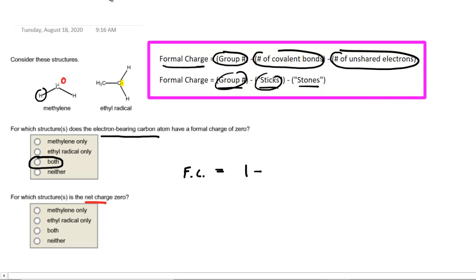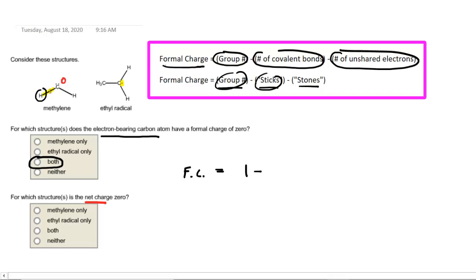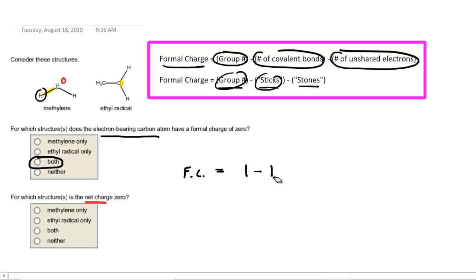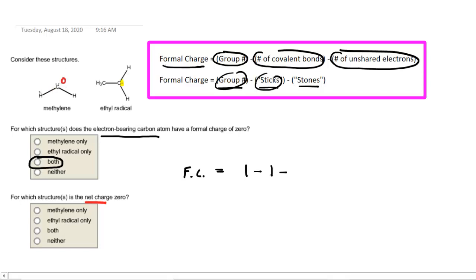We'll subtract the number of covalent bonds — there is only 1 covalent bond connected to that hydrogen atom. And then we'll subtract the number of unshared electrons on that hydrogen. If we look carefully, there are 0 unshared electrons on that hydrogen; there's no electron drawn at all on that hydrogen. When we perform this calculation, we will see that the formal charge on that hydrogen is indeed 0.